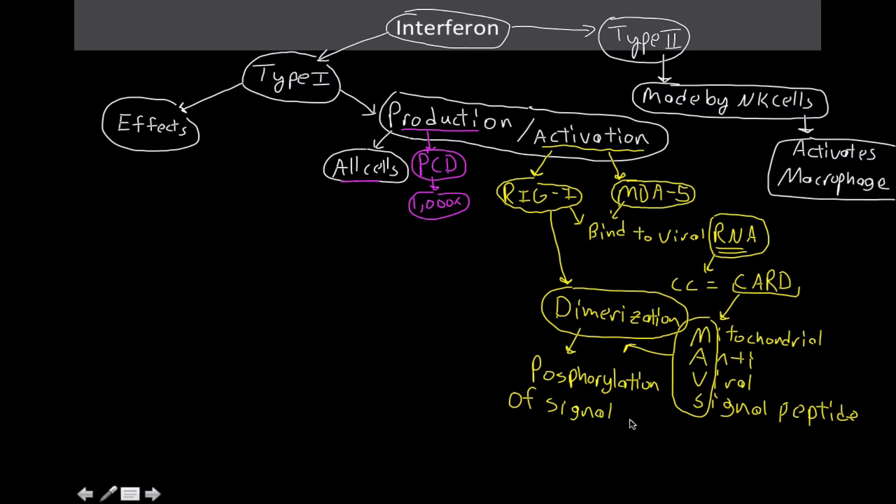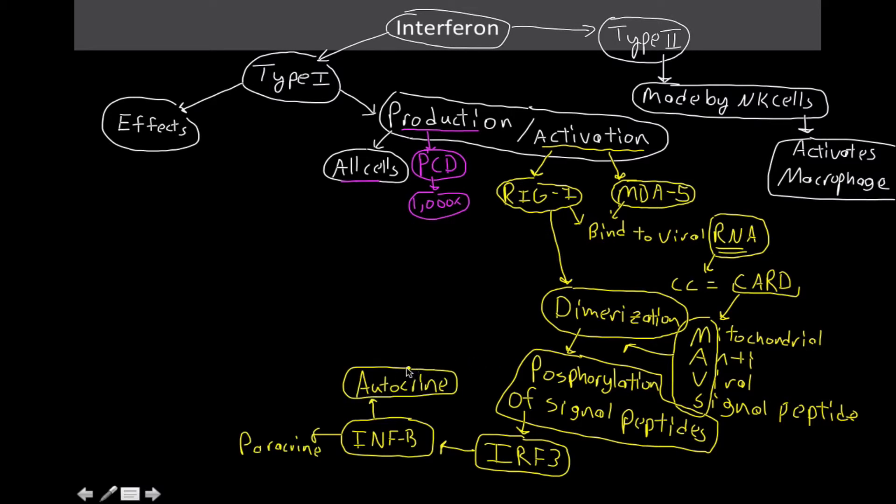The book doesn't go into a lot of detail on what these guys are composed of other than the fact that they have a CARD domain and an alpha helix. But this dimerization is going to lead to the phosphorylation of other signal peptides. This is going to lead ultimately to the activation of the transcription factor known as IRF3, or interferon response factor 3. And this is going to lead to the translation of interferon beta. Remember that from the diagram here. So interferon beta has both autocrine and paracrine effects.